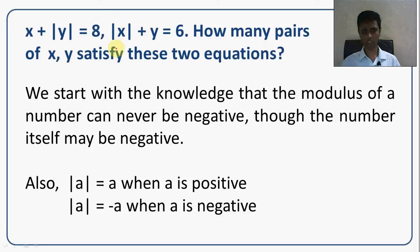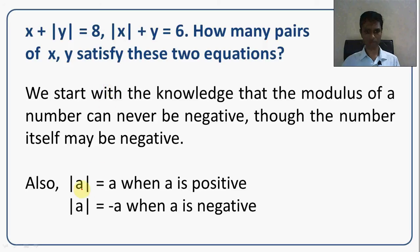Let us look at what this modulus means. Modulus of a number can never be negative — the number itself can be negative, but modulus of x cannot be less than 0. Modulus of 3 is 3, and modulus of minus 3 is also 3. Defined more precisely: modulus of a is a when a is positive, minus a when a is negative, and 0 when a is 0. This is how we define the modulus function.